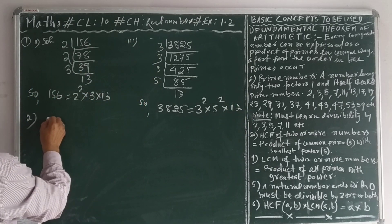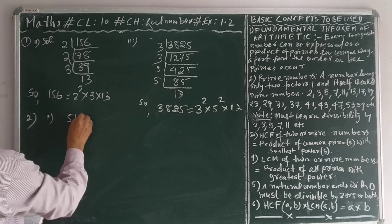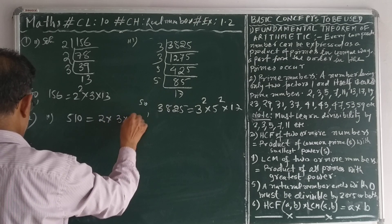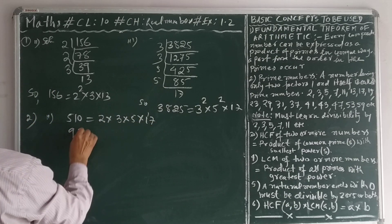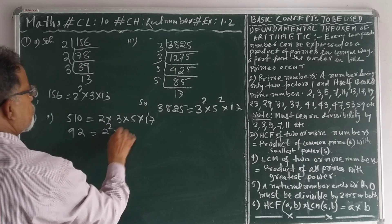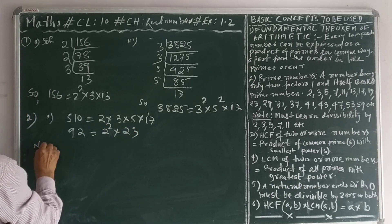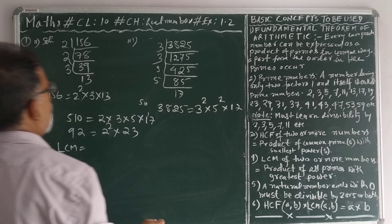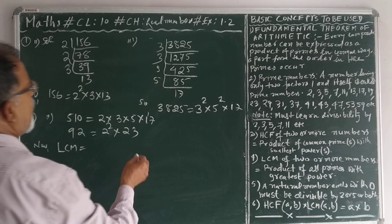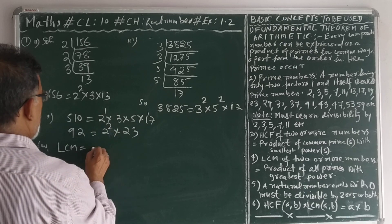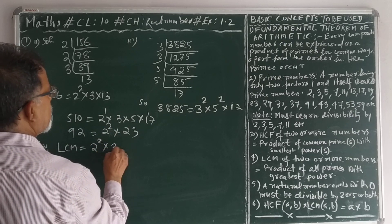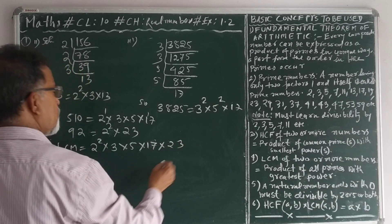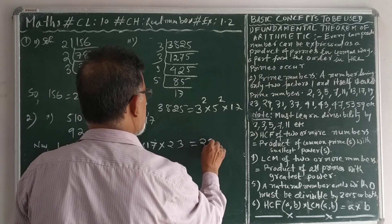Question number 2: Finding the prime factorization. The result is 2 to the power 2 into 3 into 5 into 7 into 23, and when you multiply these together it will be equal to 23,460.